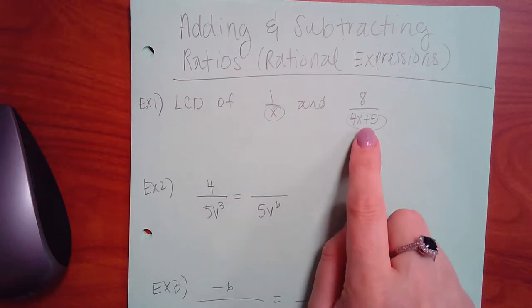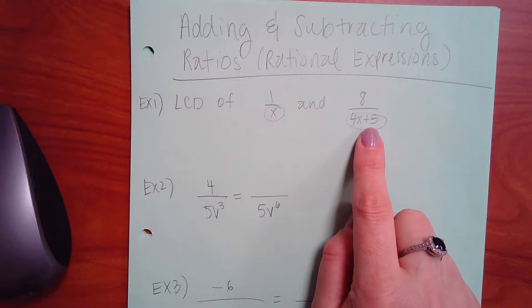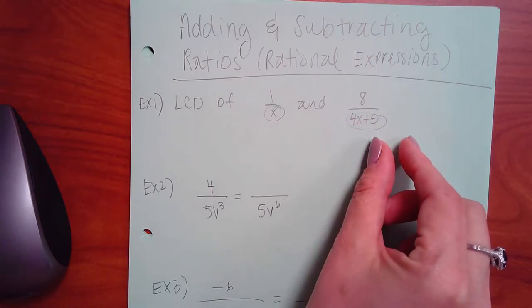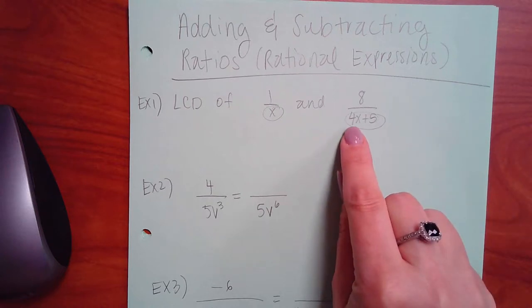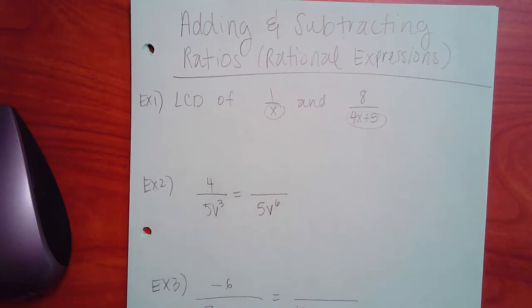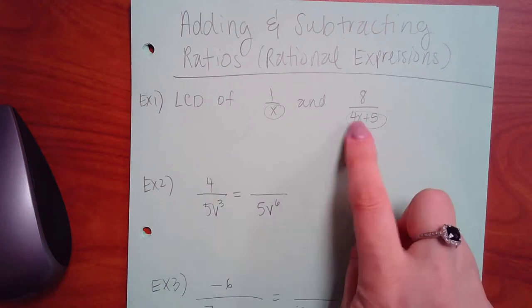Can you factor this one at all? Well, there's no squares, so you're definitely not going to have the two sets of parentheses. But does four and five have anything in common that I could factor out? No. So I cannot factor this any further.